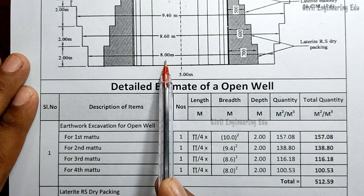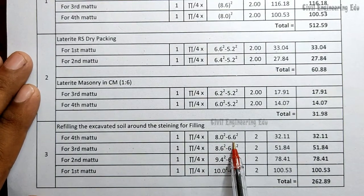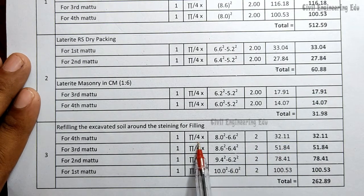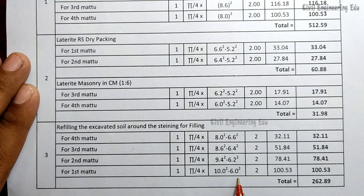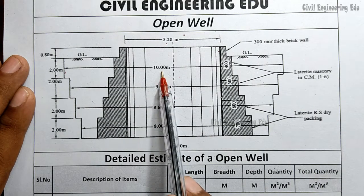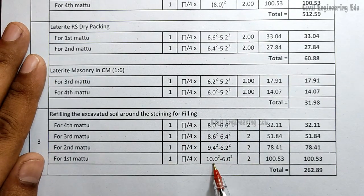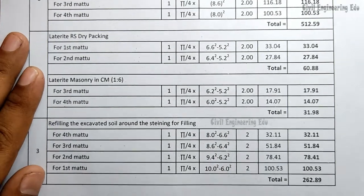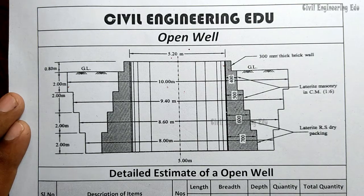For the last (fourth) step, D = 8 meters (excavation outer diameter) and d = 6.6 meters (masonry outer diameter). Quantity = π/4 × (8² − 6.6²) × 2. The same formula π/4 × (D² − d²) × depth applies to all steps, with outer diameters of 8, 8.6, 9.4, and 10 meters respectively. This is how we calculate the complete quantity of an open well estimate. If you have any doubts, comment below; if you liked the video, hit the like button.